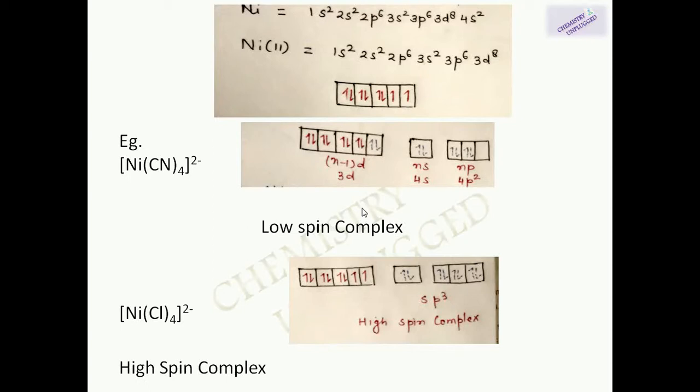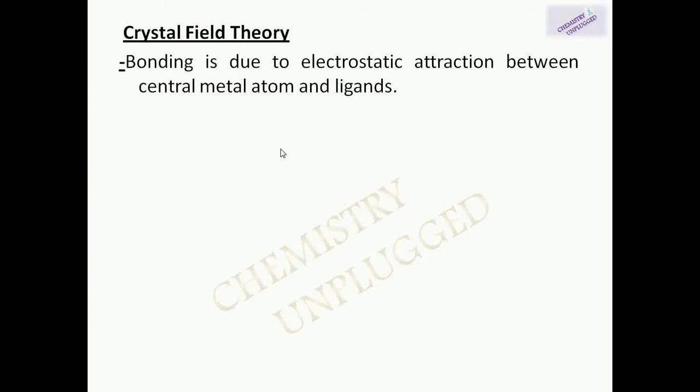Next we come to crystal field theory. According to crystal field theory, the bonding between the central metal atom and ligand in a complex compound is due to electrostatic attraction. Before starting the details of crystal field theory, we first need to know about the d orbitals of the metal atom.